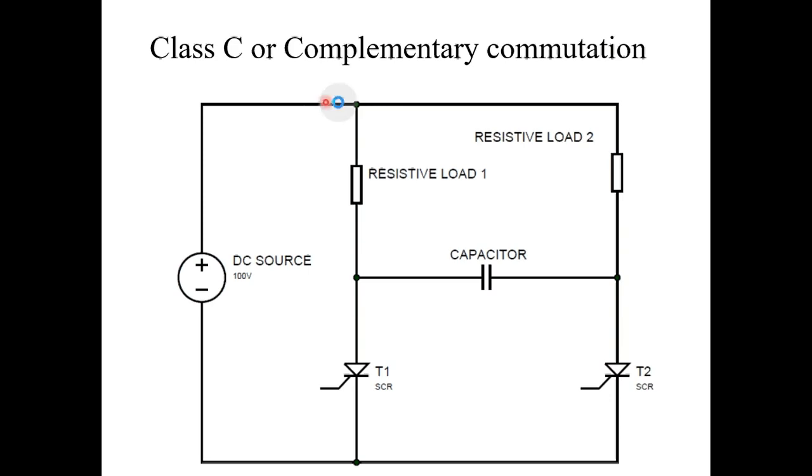That's why it is called complementary commutation. At any single time, current only flows through load 1 or load 2. Thank you.